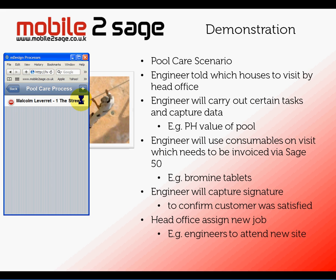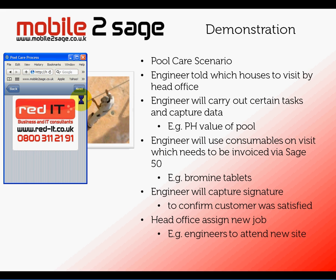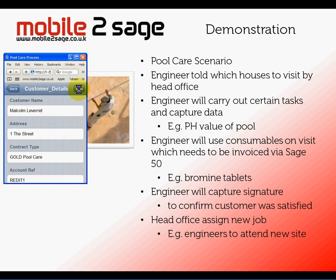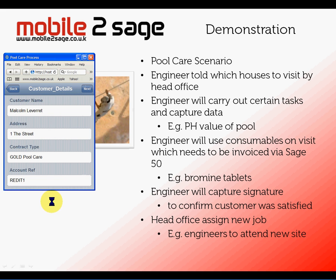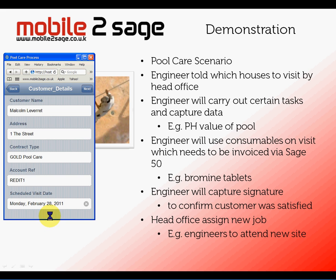There's our corporate logo, and I can just click Next to go to the next screen, or press Back to navigate — dead simple. On that screen I'm showing the customer details in terms of who they are and where they are. This particular customer has a gold pool contract, so he will get the top level service. I can also put on there Sage information like account references, whether he's on hold, and so on.